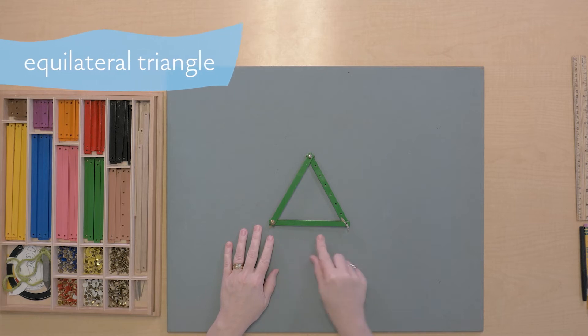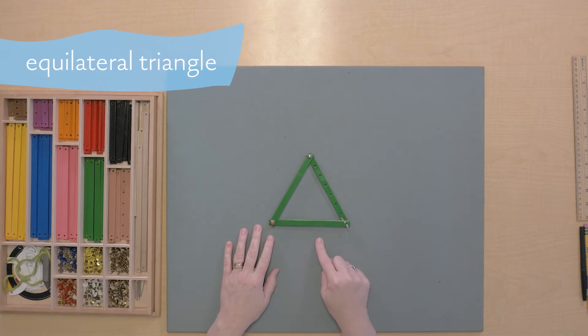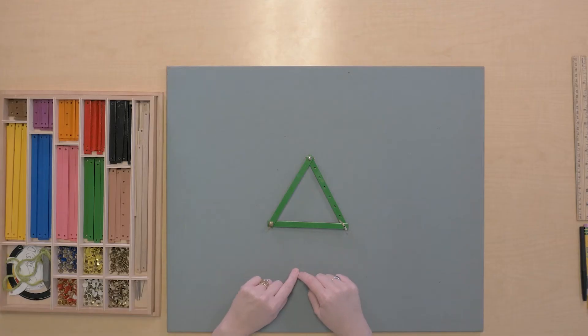This is an equilateral triangle. There's a Latin word equus meaning equal and lateralis meaning sides, and together that gives us equilateral. This is an equilateral triangle. All its sides are equal.